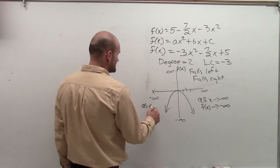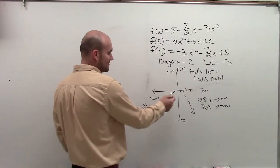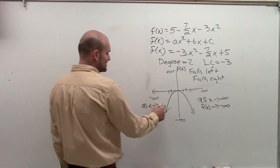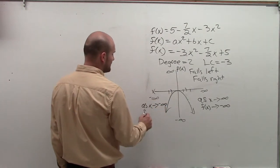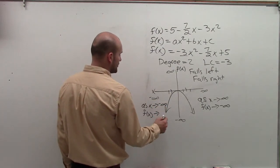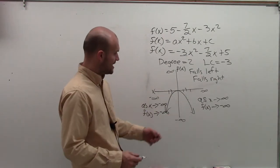And then over here, as x approaches negative infinity, so as I keep on going to the left to negative infinity, f(x) approaches negative infinity as well, keeps on going down.